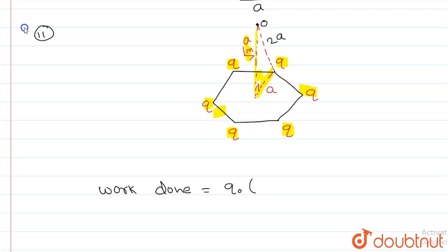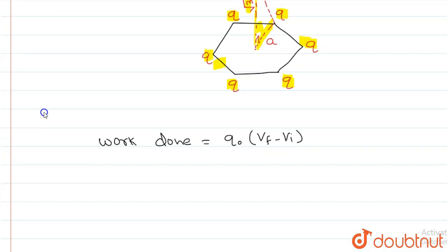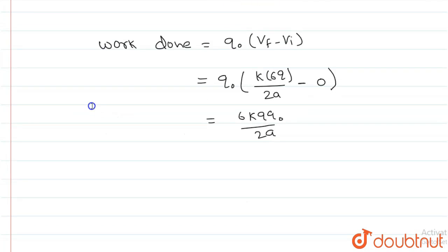q0 times final potential minus initial potential. Final potential is k times 6q divided by 2a, minus initial potential which is 0 because potential at infinity is 0. This equals 6kq times q0 divided by 2a, which equals 3kq times q0 divided by a.